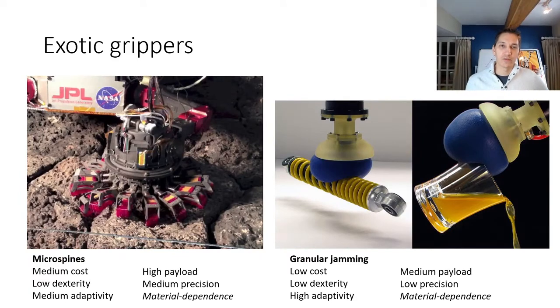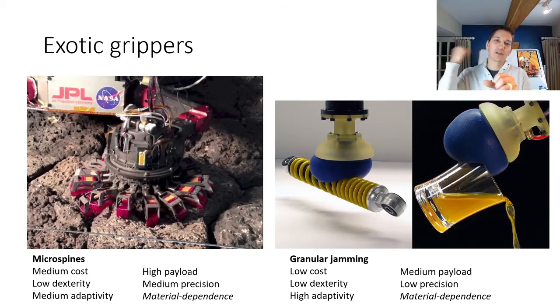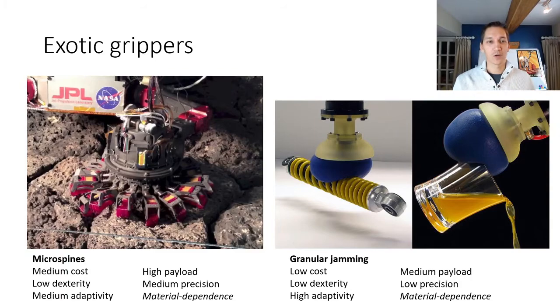There are also many different types of exotic grippers that are developed for specific types of objects. For example, microspine grippers can grab very strongly onto rough rock surfaces, and these granular jamming grippers basically consist of coffee grounds inside of a balloon, and when you touch the balloon to an object and suck the air out, all the coffee grounds stick together rigidly, and for many objects you can actually get fairly high friction grasps around these with very high adaptivity. However, they are object shape dependent and also material dependent, and so in some cases they just don't work at all.